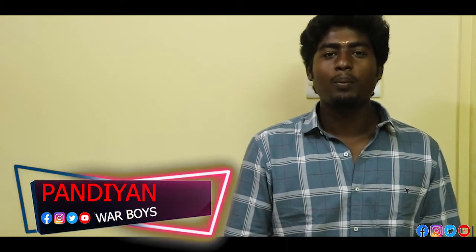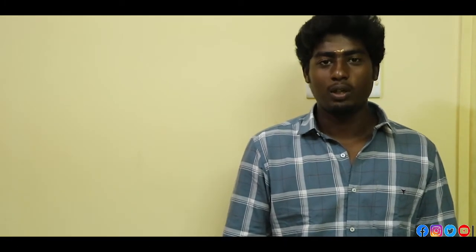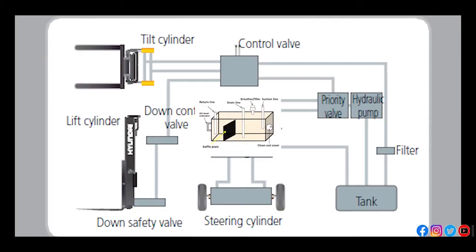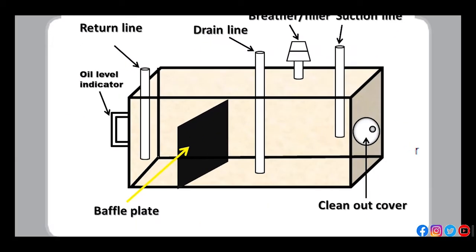Hello everyone, I am Panyu. Today we are going to see the working of a hydraulic system in a forklift. First of all, there is a hydraulic tank, which is the mother of the hydraulic system. It consists of a suction line, return line, and drain line — these three are the inputs and outputs. A baffle plate is provided to control the intervention of the return line mixing with the suction line.